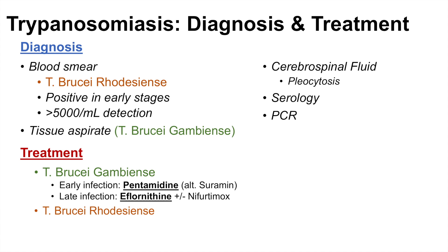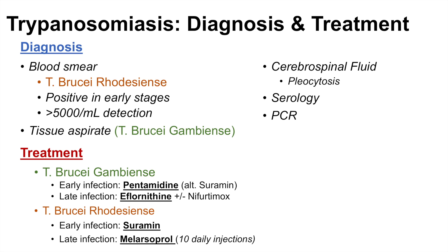If the patient was infected with Trypanosoma brucei rhodesiense and it was determined to be an early infection with no CNS involvement, we could use suramin as the treatment. But if it was found to be a late infection with CNS involvement, we'd have to use melarsoprol. You might wonder why we can't use eflornithine in these cases — it appears that eflornithine has no effect on treating Trypanosoma brucei rhodesiense, so we have to use melarsoprol. That's why it's also important to determine which species we're dealing with. Melarsoprol given as 10 daily injections has been shown to be effective.